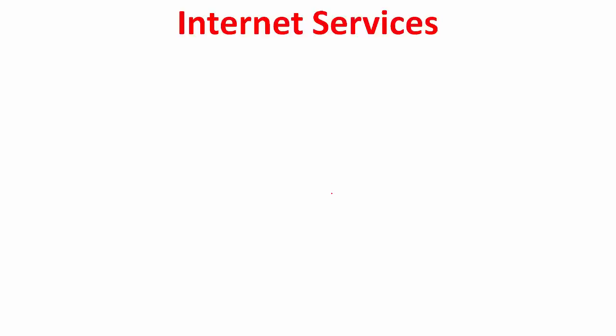Let's start out by identifying the utility of computer networks via listing some internet services that you regularly use. I guess everyone knows what the internet is, but some of you may not know how this word is derived. If you see 'internet', the 'inter' refers to interconnecting, and 'net' refers to networks — basically computer networks. So internet basically interconnects different computer networks; that is how this word is derived.